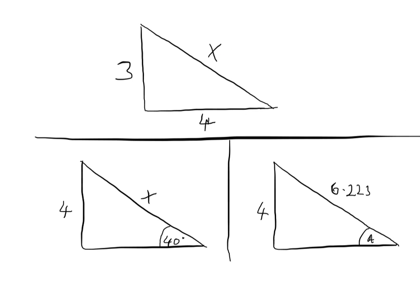Looking back at our three diagrams, if we can discount that it's definitely not Pythagoras' theorem, it has to be one of the other two types. As I said, you basically use the same method to solve both of those — in other words, we use SOHCAHTOA. So I'm going to show you how to solve this one now.